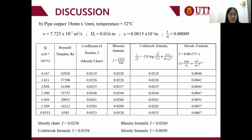Next is the copper pipe with dimensions 18 mm × 1 mm at temperature 35.25°C. From the Moody chart, the friction factor f is 0.0256. The Colebrook formula gives the same value of 0.0256. The Blasius formula gives 0.0260, and the Moody formula gives 0.0050.